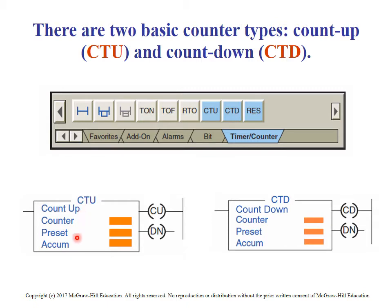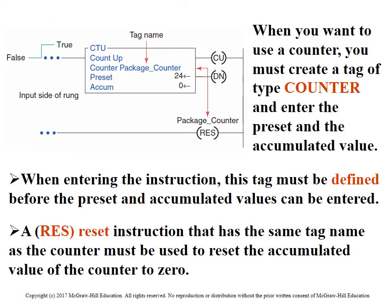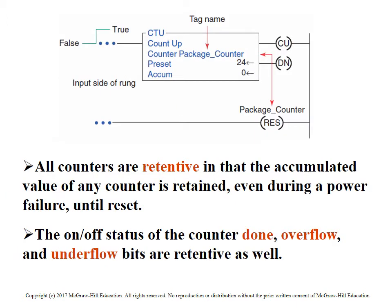They show an illustration of both of those here. Looking at the counter up, we've got what they call the package counter, preset value of 24, accumulated value of zero. They also included the reset, noting that the package counter is the name of this counter. The address has to match that address in order to work properly — if it's not the same address, it will not reset that counter.